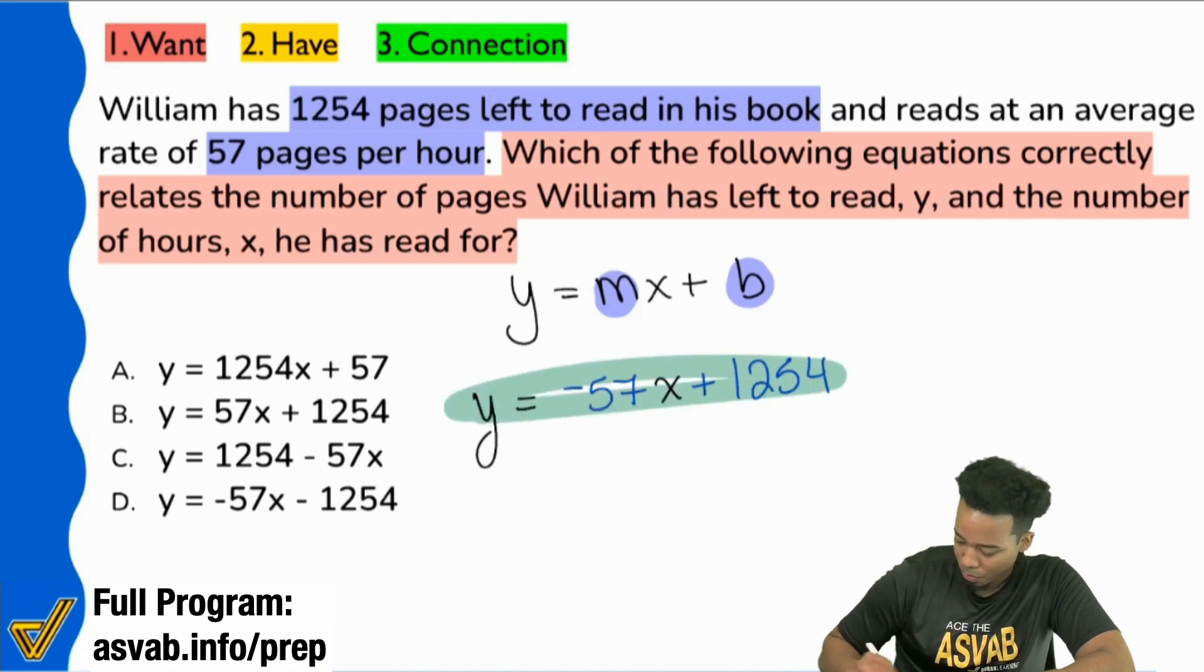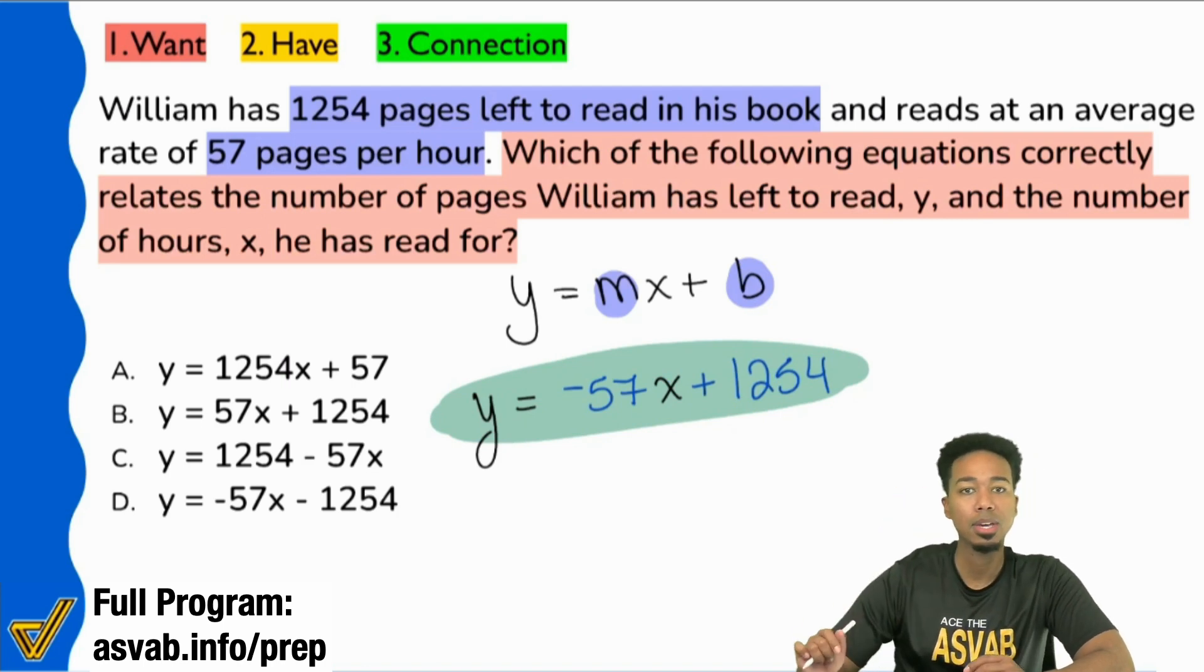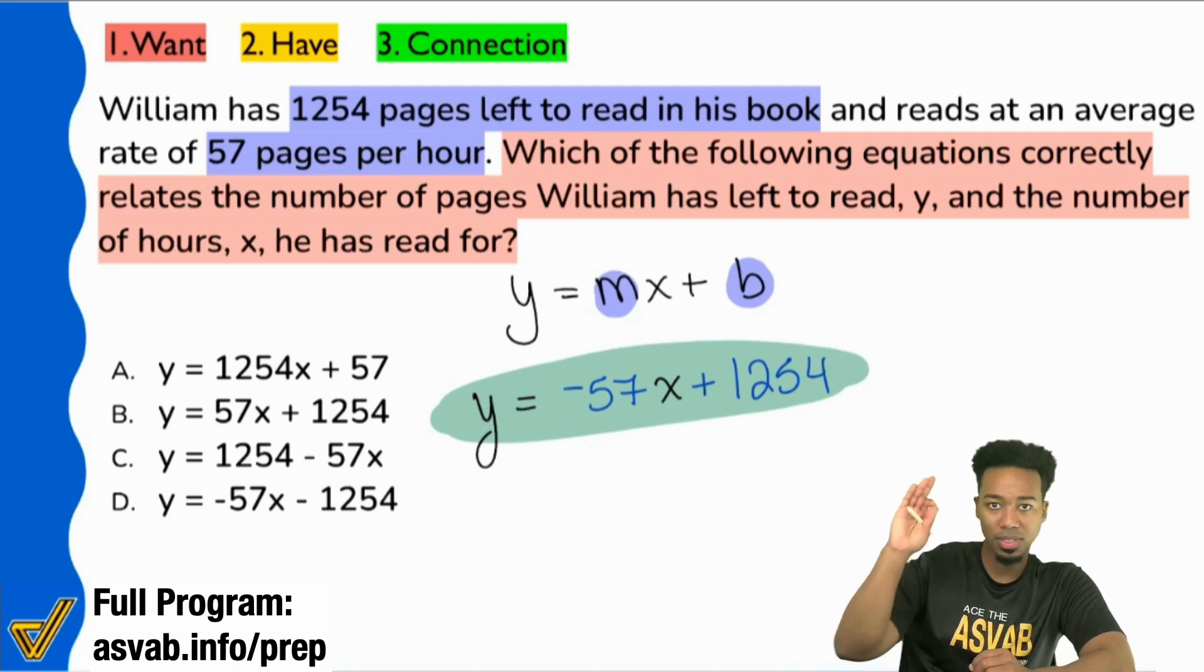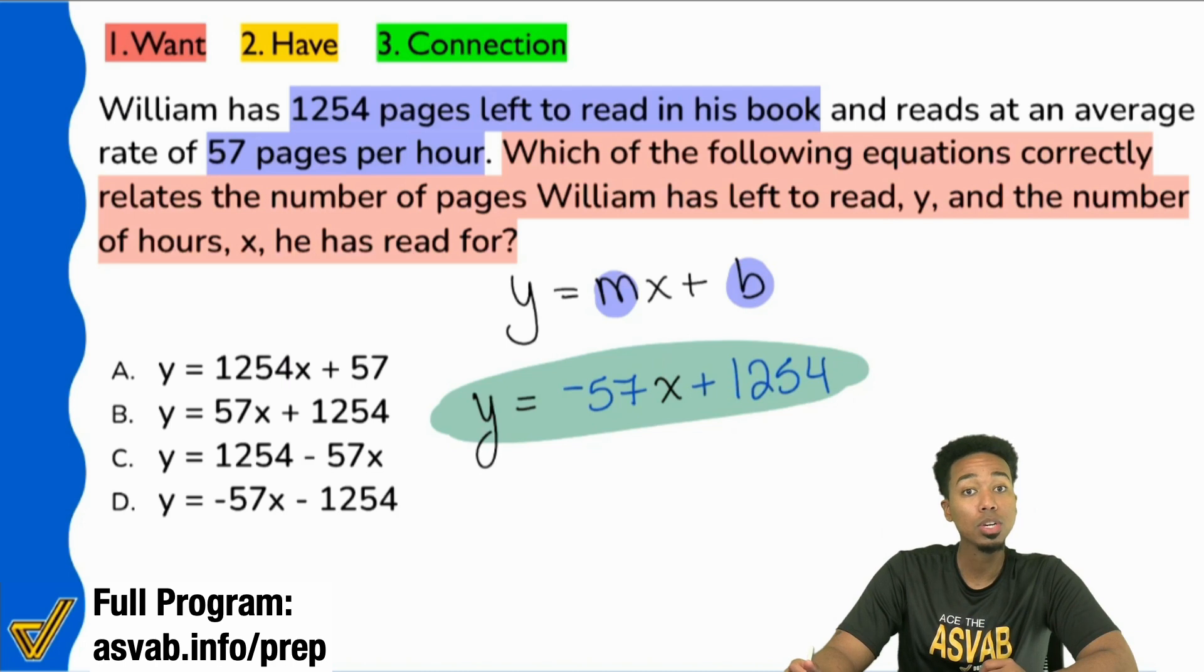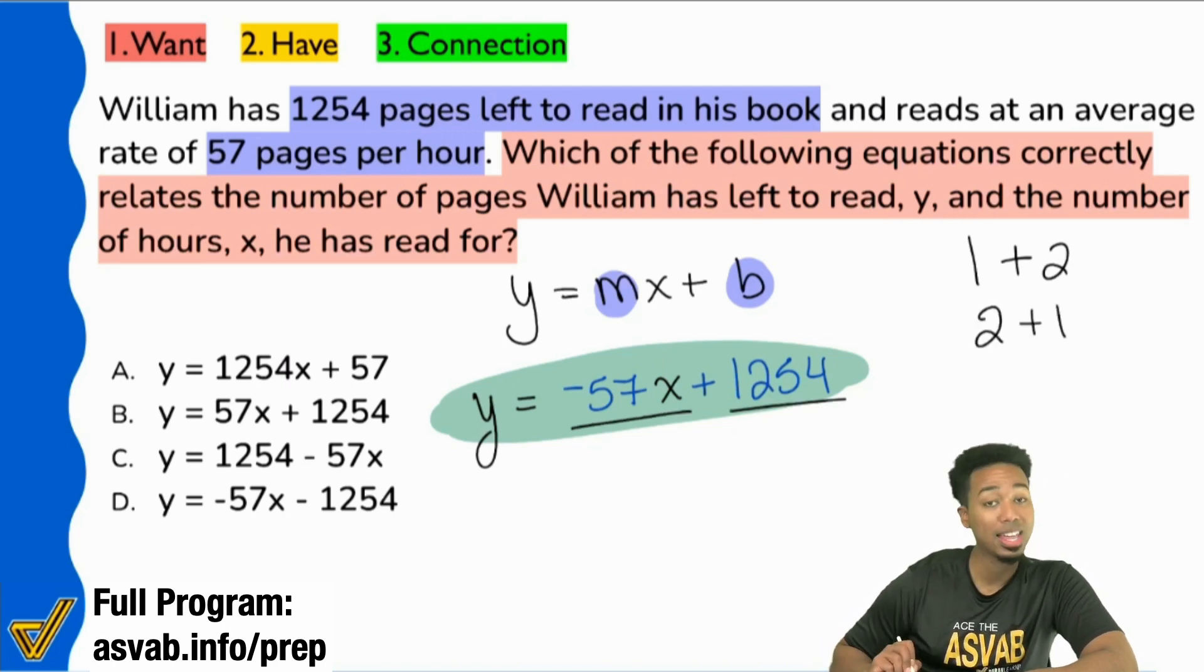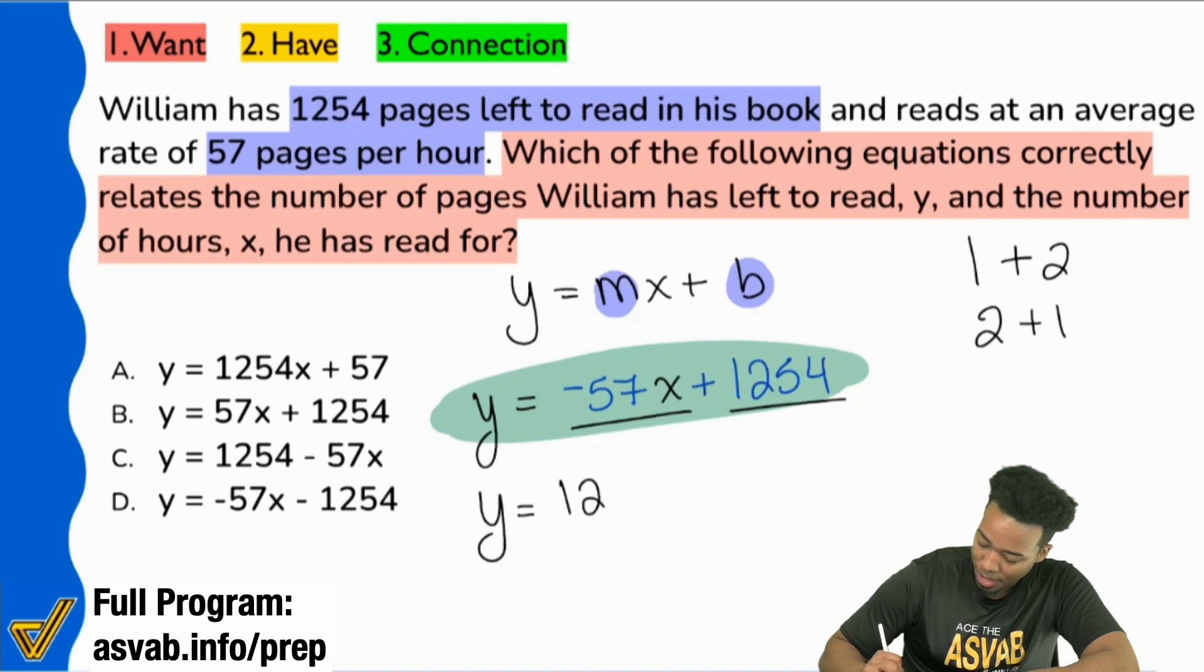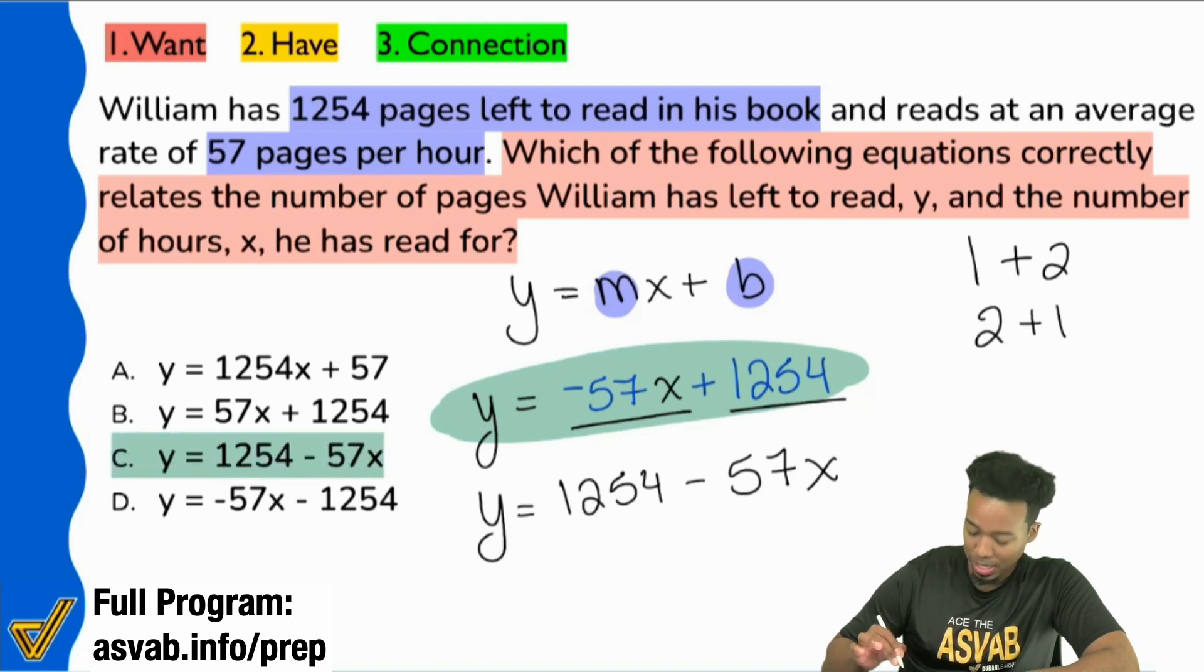And there's your equation right there. Negative 57x because you're going down 57 pages every hour and you start with 1,254 pages left to read. And the only trick here is that, remember everybody, one plus two is the same as two plus one. So if I have negative 57x plus 1,254, that's the same thing as saying y equals 1,254 minus 57x. Those two are the same thing. And so because of that, our answer, our correct answer is C.